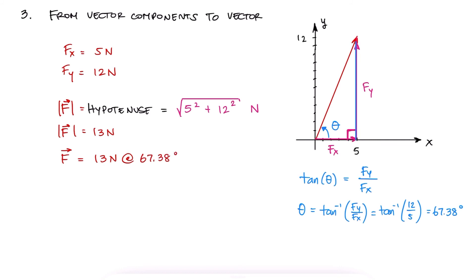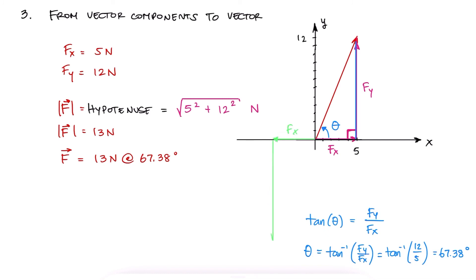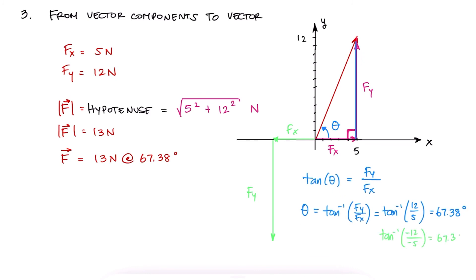Now this angle can be tricky, since if we had, for example, fx equal to minus 5 and fy equal to minus 12, solving for the angle mathematically would still give us a value between 0 and 90 degrees, when in fact we know that the angle from the positive direction of the horizontal line, which I just mentioned was the absolute reference for angles, would be between 180 and 270 degrees.